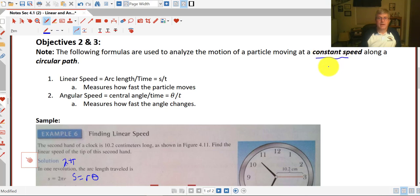So constant speed, clearly that's important, and on a circular path. So along an arc or around a circle. So our linear speed is calculated by the arc length divided by time, or s divided by t. This measures how fast the particle moves.